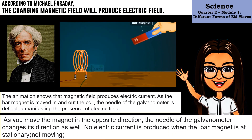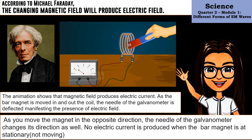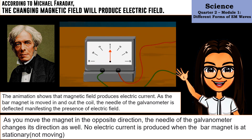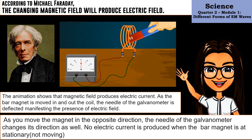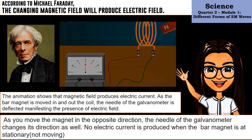The animation shows that the magnetic field produces electric current. As the bar magnet is moved in and out of the coil, the needle of the galvanometer is deflected, manifesting the presence of an electric field. As you move the magnet in the opposite direction, the needle of the galvanometer changes its direction as well. No electric current is produced when the bar magnet is stationary.